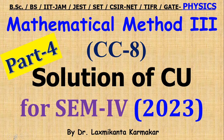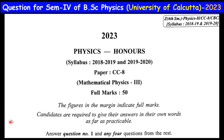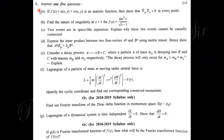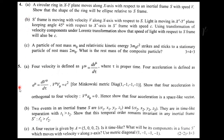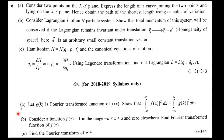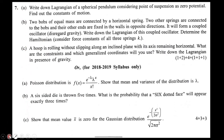Hello, welcome to everyone. In this video, this is part 4 — the solution of CCA8, that is Mathematical Methods 3 of the ER2023 under Caldwell University Physics Honors. Looking at the total question paper that is 2023: question number 1 was discussed in part 1, questions 2 and 3 in part 2, questions 4 and 5 in part 3, and today we discuss question number 6, which is a 3-3-6 question. In the upcoming part we will continue with question number 7.